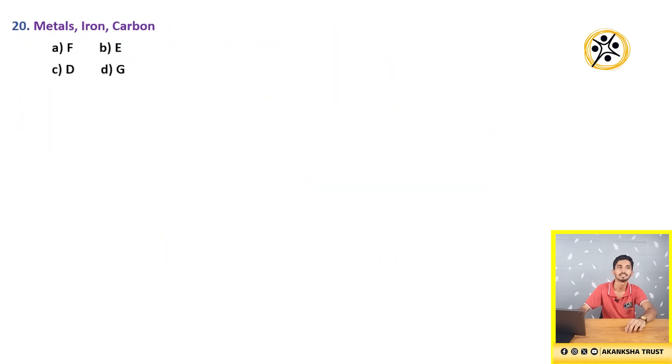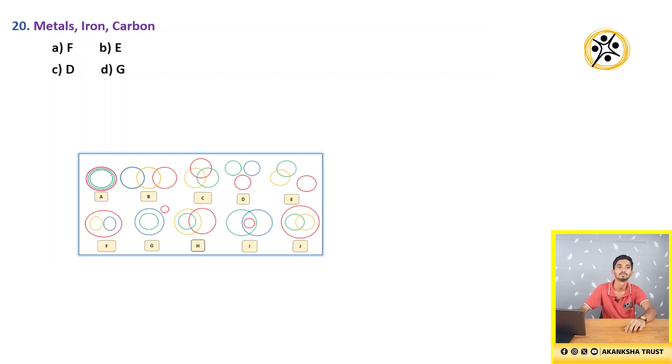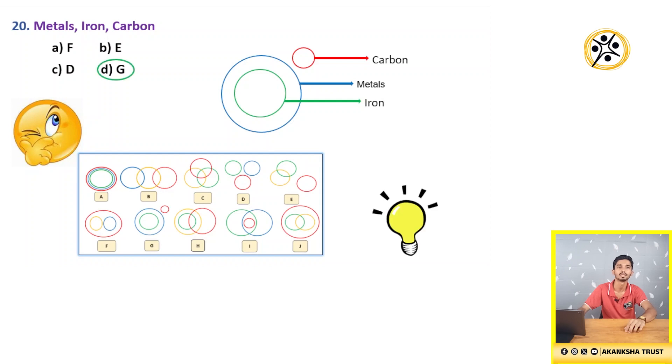20th question: Metals, Iron, Carbon. First circle represents metals. Inside metals, we are having iron, because iron is a metal. But all metals cannot be iron. And carbon, which is non-metal, is placed away from metals and iron. Hence, this figure holds good with G. Hence, the correct answer is option D, i.e. G.